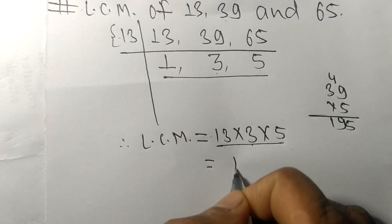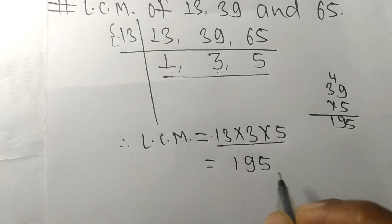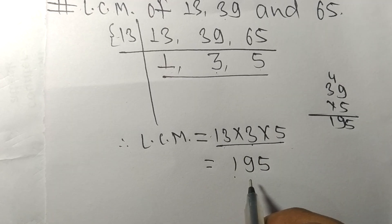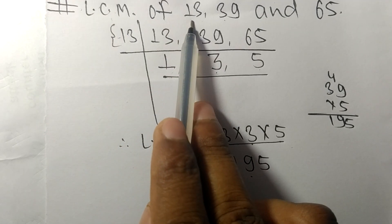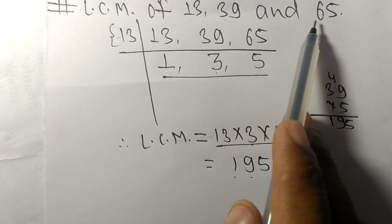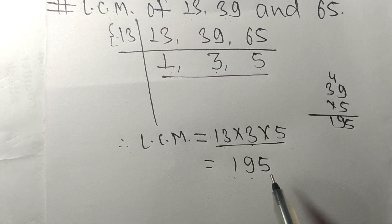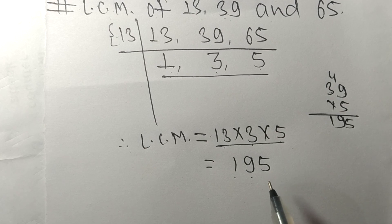So 195 is the LCM of 13, 39, and 65. So this much for today, and thanks for watching.